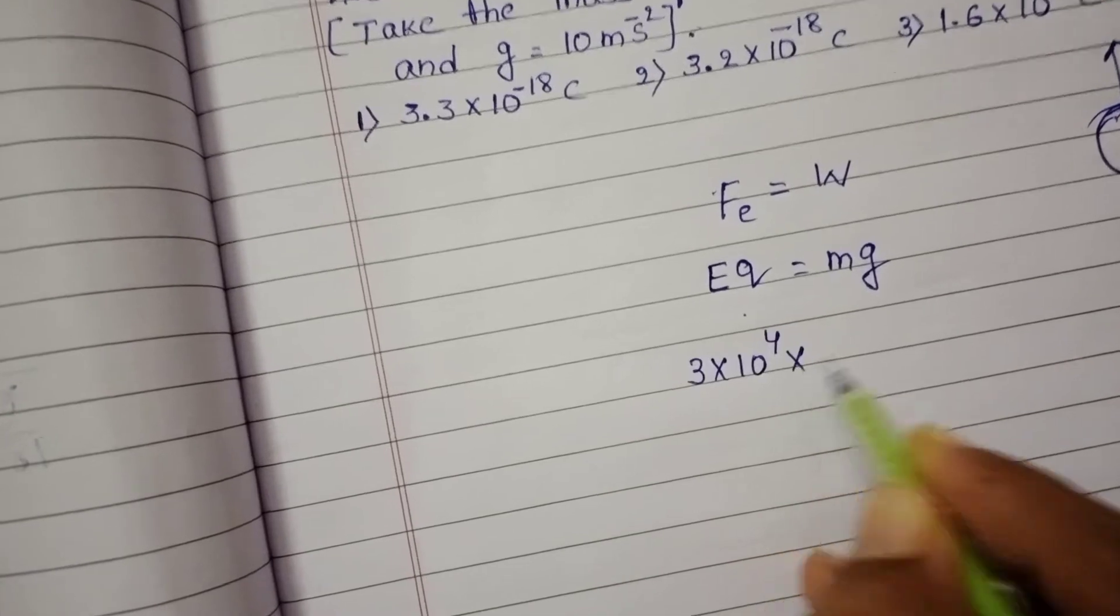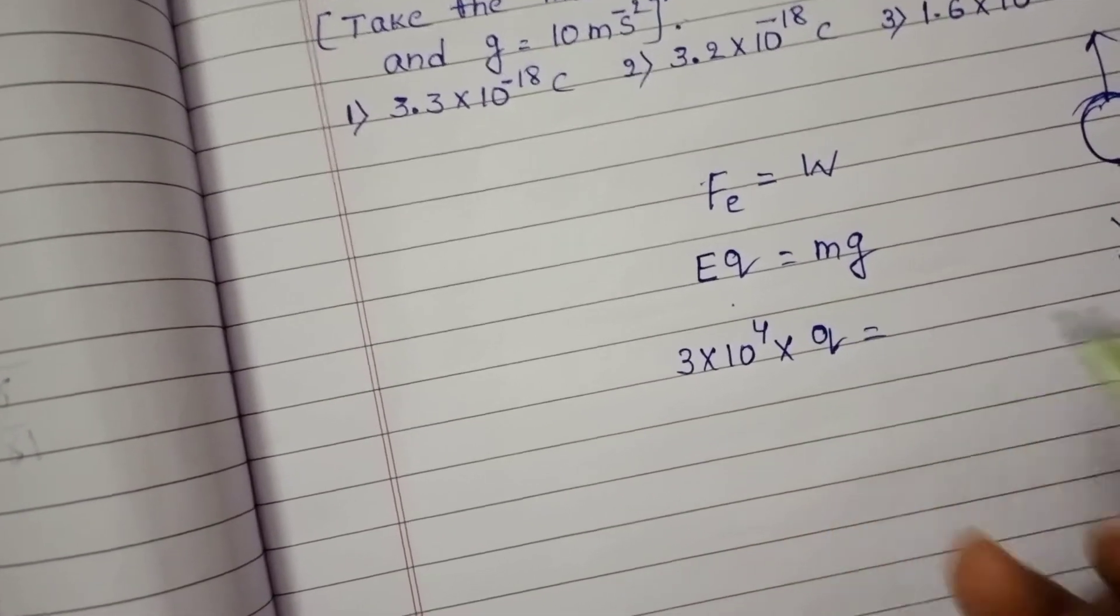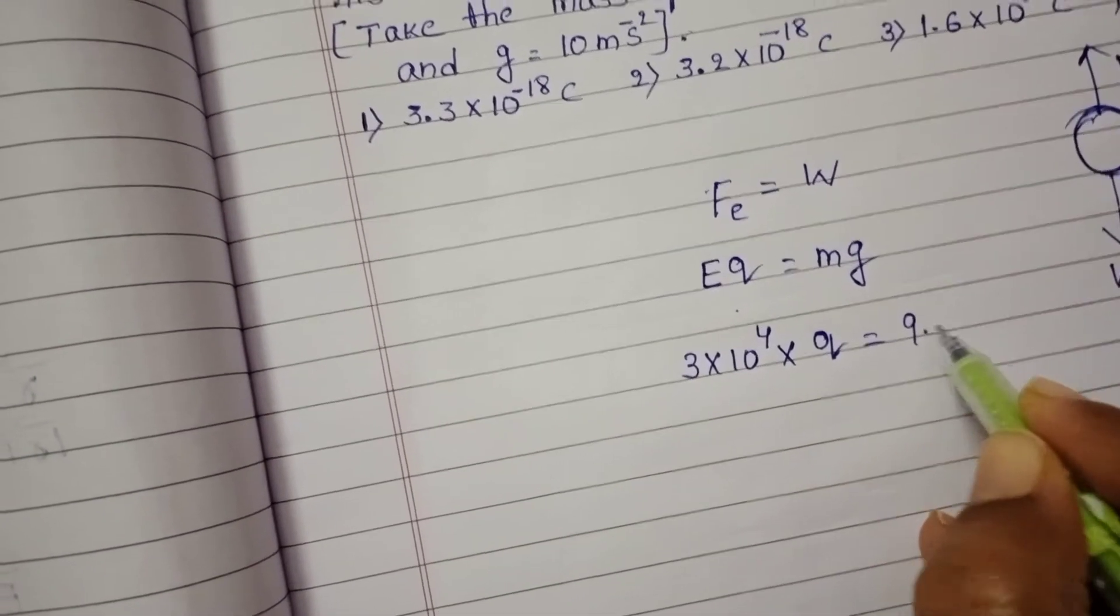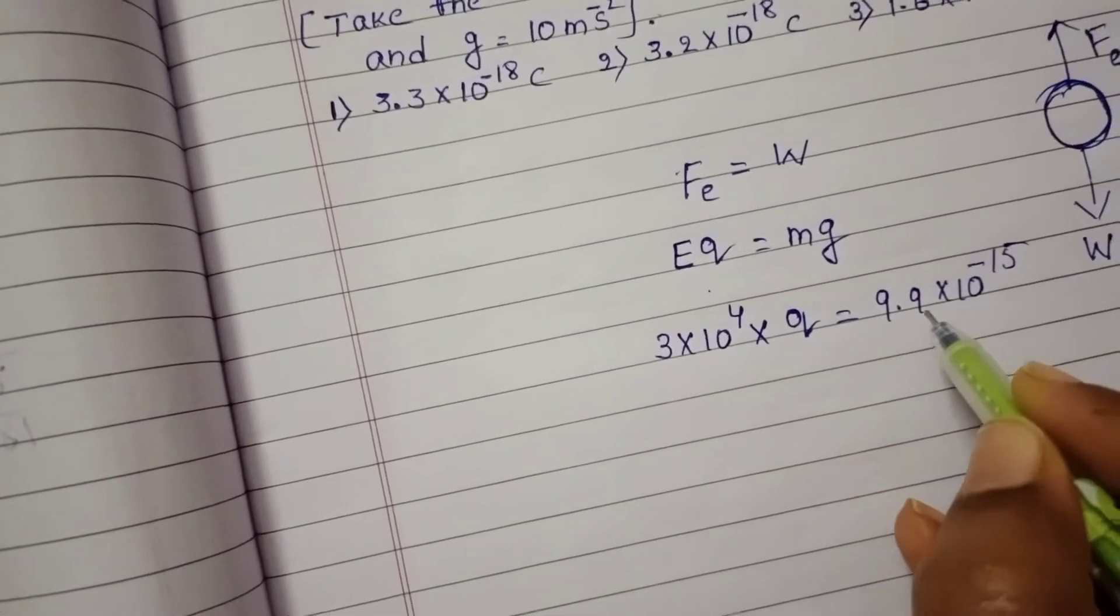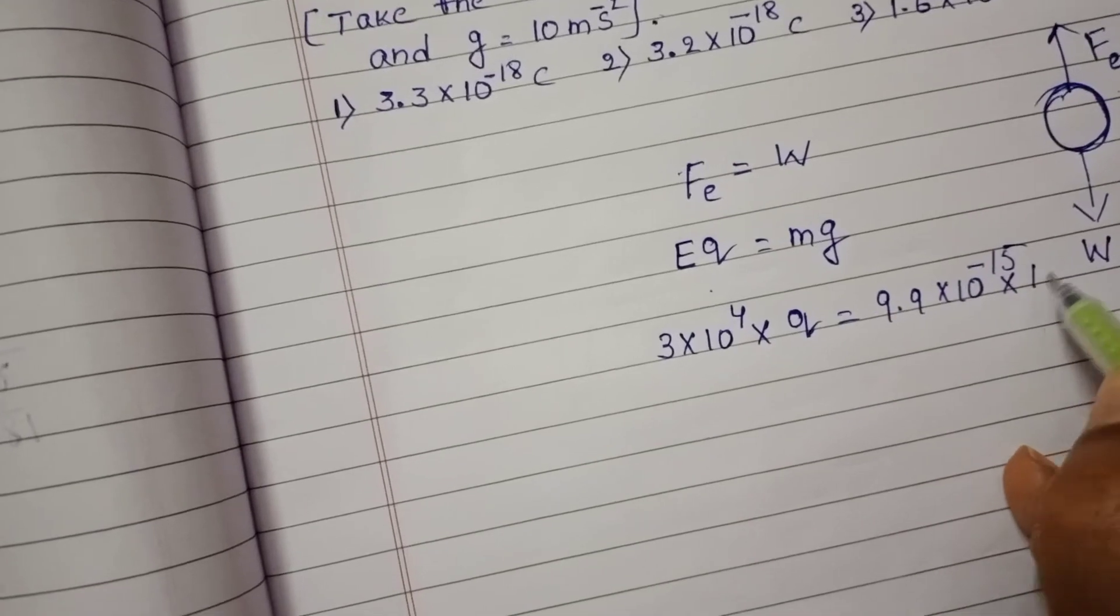From this, charge of the oil drop equals 9.9 into 10 power minus 15 kg and acceleration due to gravity 10.